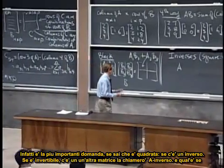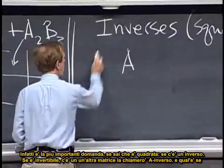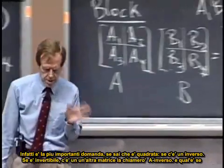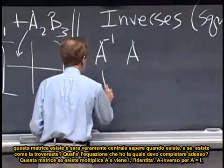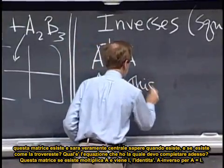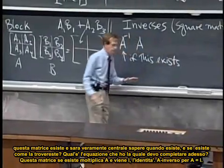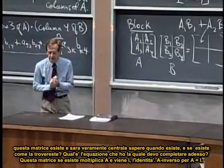If it is invertible, then there is some other matrix, shall I call it A inverse? So this is if, there's a big if here. If this matrix exists, and it'll be really simple to figure out, when does it exist?